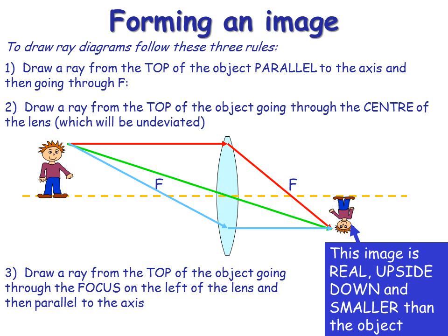So this image will be formed where the rays meet. And again, you describe the image in three ways. For this one, it's real. It can be projected on a screen. The light rays actually do meet there. So it's real. It is upside down. And as you can see, it's smaller. There are lots of different images. So you need to watch the next video to see how different images are formed.